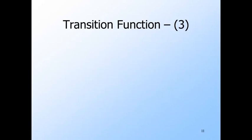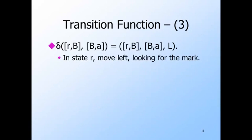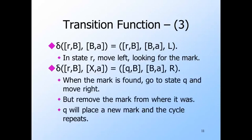And here are the rules for control state R. In state R, as long as we do not see the mark in the first track, we simply move left with no change in the state or the tape symbol. When we find the square that has the mark, we do three things: remove the mark, go to control state Q, and move to the right. We'll be at the position just to the right of where the mark was, back in state Q, so the whole cycle repeats again with whichever input 0 or 1 is in the next square.